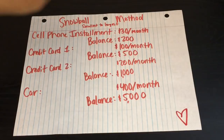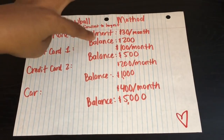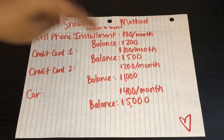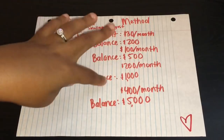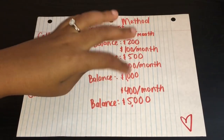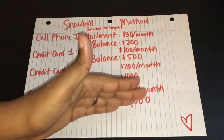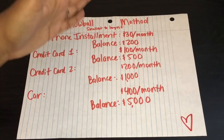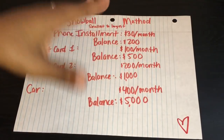So I have a cell phone installment on here. The minimum payment is $30 a month. Those are typically wrapped up in cell phone bills. The balance is $200. Credit card one, minimum payment is $100 a month, and our balance is $500. Credit card two, our minimum payment is $200 a month, and our balance is $1,000. Car, minimum payment is $400 a month, and our balance is $5,000. These are listed in order from smallest minimum payment to the largest minimum payment, but again, we're only focusing on the balance. Snowball method is paying off debts from smallest balance to largest balance: $200, $500, $1,000, $5,000.